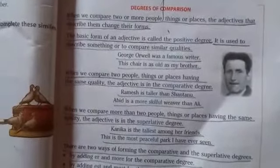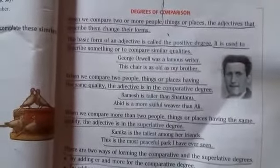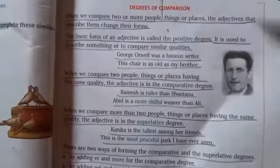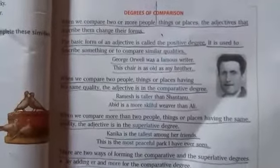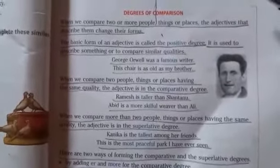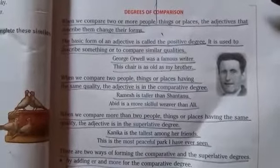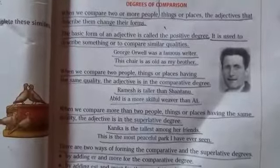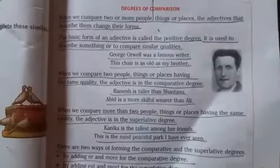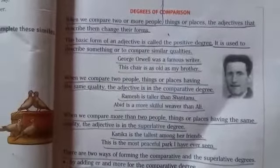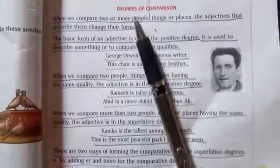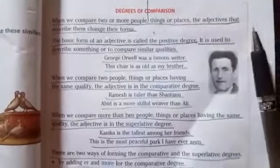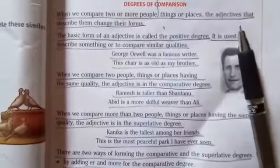When we compare — compare means tulna karna — when we compare two or more people, things or places, kabhi bhi jab hum do ya do se zyadha, either it is people, things or places ki tulna karte hain, the adjectives that describe them change their forms. The forms of adjectives change as per the number of people, things or places.